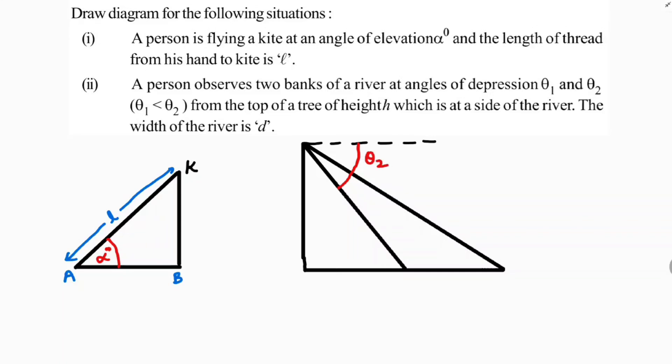Theta 2 is greater than theta 1. So here, suppose if it is 30, theta 2 is 60, so clearly this angle is 60, this is 30. So in that way. Now, and the distance between, from the top of a tree of height h meters. So here, height of the tree, height is h meters.